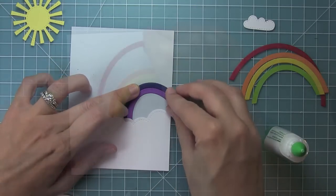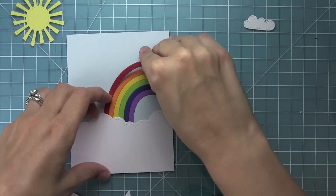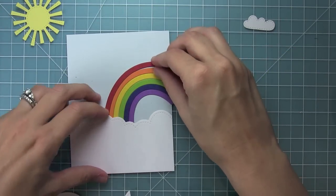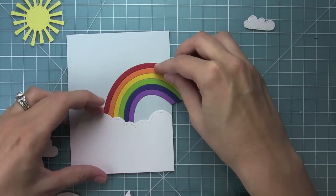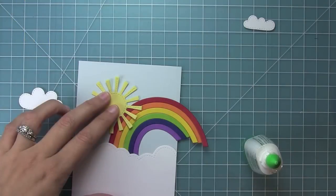Now I can layer all of my different pieces and I like using liquid glue for this because you kind of need to move them around to make sure they fit perfectly, and liquid glue really helps with that. And I just love the look of the rainbow going into the clouds.